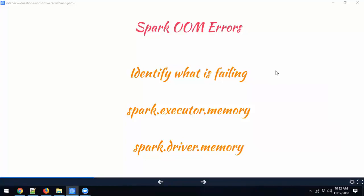There are two key components: the driver and the executors. The driver orchestrates execution between the executors. The driver has a set of memory, and each executor is assigned a certain amount of memory for execution. You can control both with spark.executor.memory and spark.driver.memory. Most often you see memory issues with executors — tasks running inside the executor running out of memory — rather than with the driver.